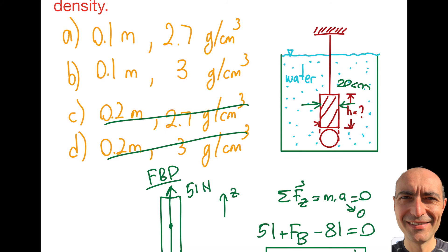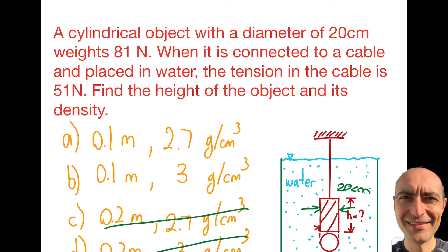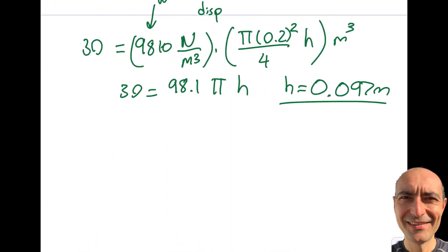So now, how am I going to find the density of this? Well, I underline it. The weight of this object is given. The weight of this object is 81 newtons.